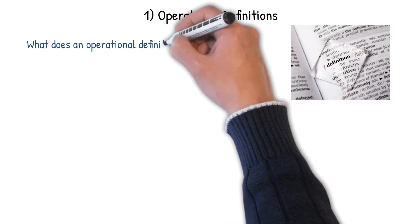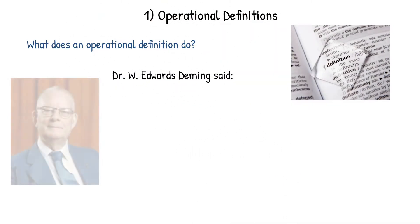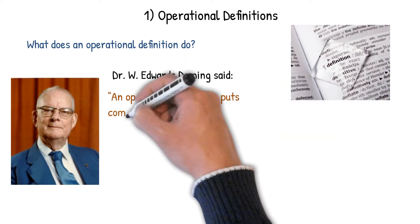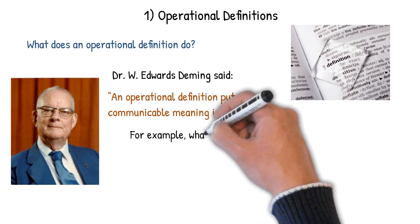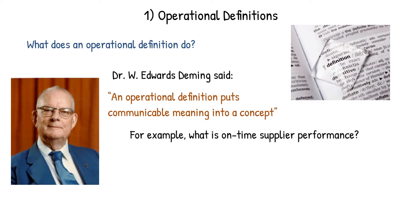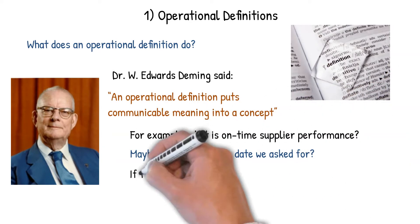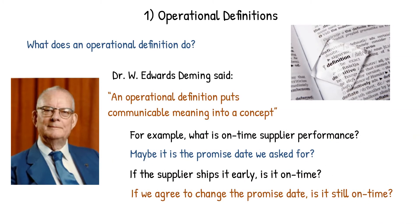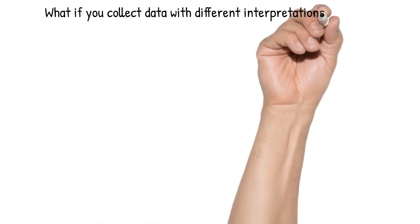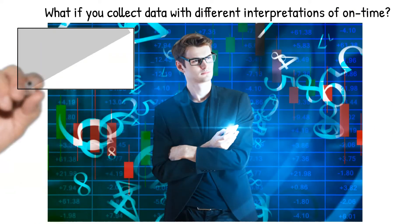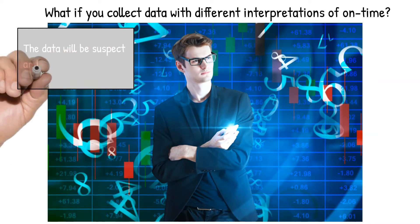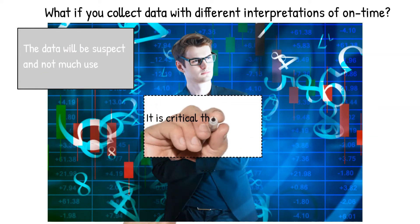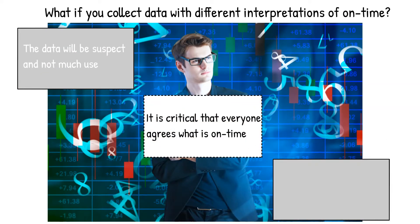Let's start with operational definitions and Dr. Deming. What does an operational definition do? Dr. W. Edwards Deming said it puts communicable meaning into a concept. For example, what is your on-time performance from your supplier? Maybe it's the promise date you asked for — if they ship it early, is it still on time? Or if you agree to change the promise date, is it still on time? If you collect data on on-time with everybody having a different interpretation, that data is going to be suspect and not much use to you.